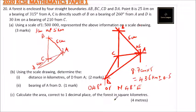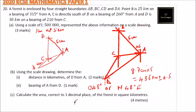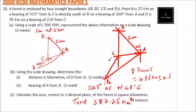For part C, calculate the area to one decimal place of the forest in square kilometres. You get the area by calculating the area of the triangles within the forest. This angle is 90° plus 80°, which is 140°. If you calculate the areas of the triangles correctly, you should get a total area of approximately 387.25 km².